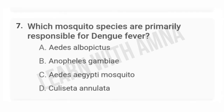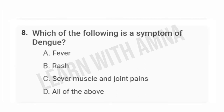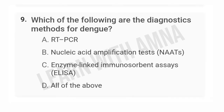Which mosquito species are primarily responsible for dengue fever? The correct answer is D. Which of the following is a symptom of dengue? A) Fever. B) Rash. C) Severe muscle and joint pains. D) All of the above. The correct answer is D.